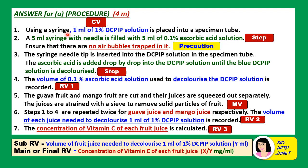Now let's look at the written procedure answer. Step 1: by using a syringe, 1 ml of 1% DCPIP solution is measured and placed into a specimen tube. This states your constant/fixed variable. Step 2: a 5 ml syringe with needle is filled with 5 ml of 0.1% ascorbic acid solution. Ensure there are no air bubbles trapped in the syringe — this is a precaution, or else the reading will be inaccurate. The syringe needle tip is inserted into the specimen tube and ascorbic acid is added drop by drop until the blue DCPIP solution is decolorized.